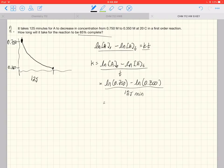And what we will get here is a value of 6.097 times 10 to the minus 3 reciprocal minutes.